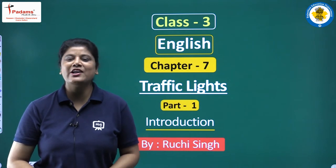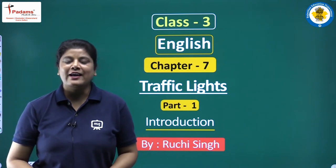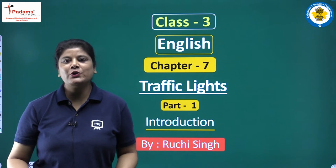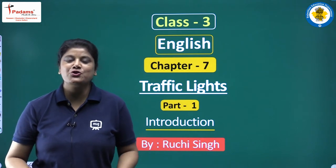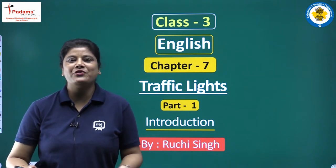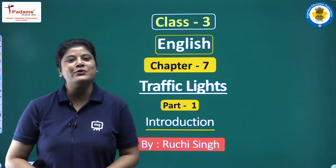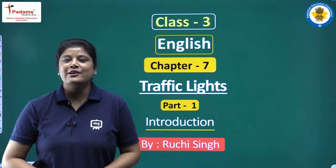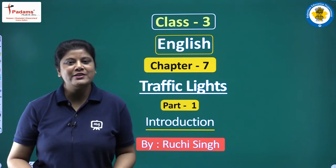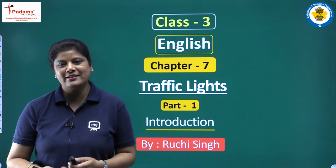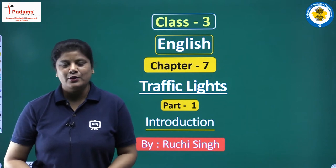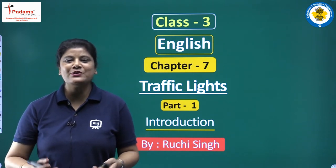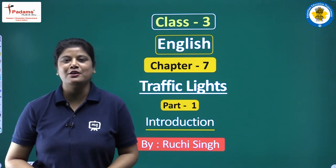What are traffic lights? The lights which control the movement of traffic are known as traffic lights, and they are of red, orange and green color. Why are traffic lights important for us?